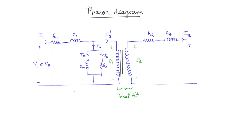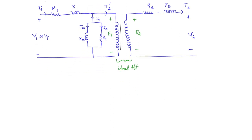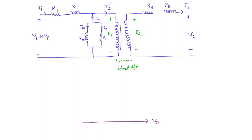We will start with the secondary side voltage V2. That means we are considering V2 to be the reference phasor. So we will draw this horizontally. This is V2.